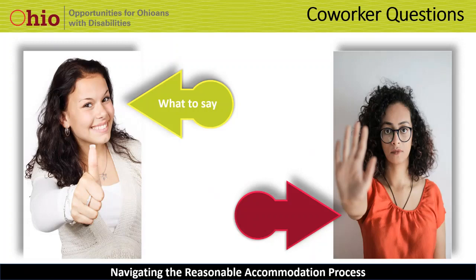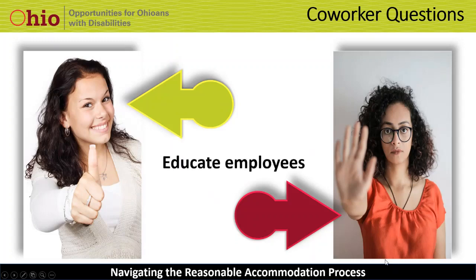We recommend consulting your HR team and legal professionals to create a response for these kinds of questions. We have included examples from the EEOC in the Learner's Guide. One best practice is to provide education to new employees at orientation and to all employees on a regular schedule about laws you are required to follow, such as the Family Medical Leave Act, workers' compensation laws, and the Americans with Disabilities Act. When employees are better informed about these laws, it may increase their awareness of accommodations in the workplace and prevent questions.